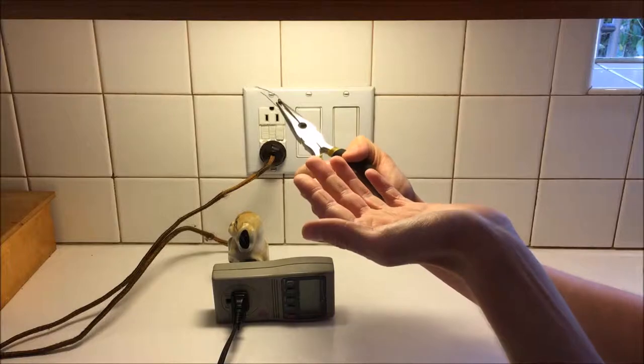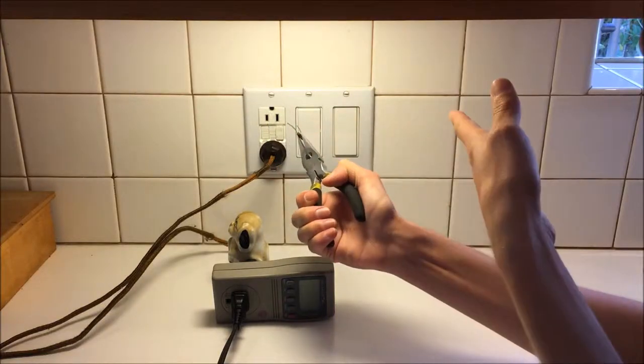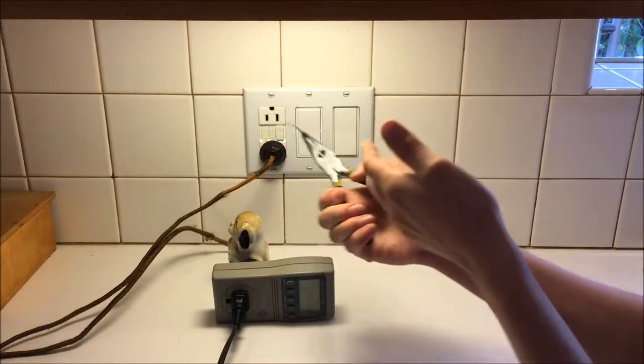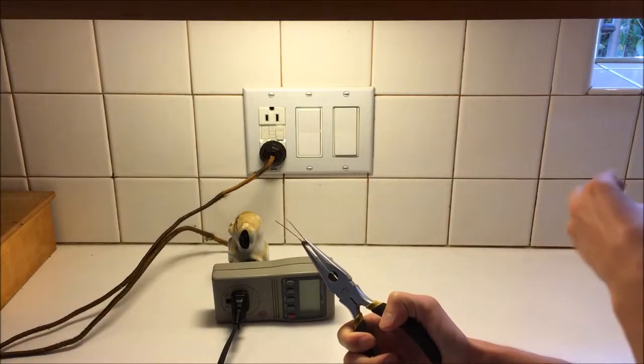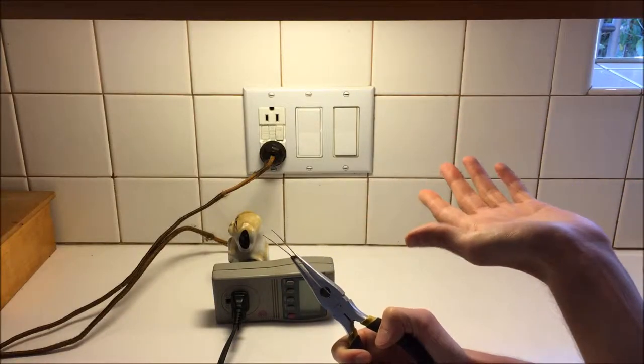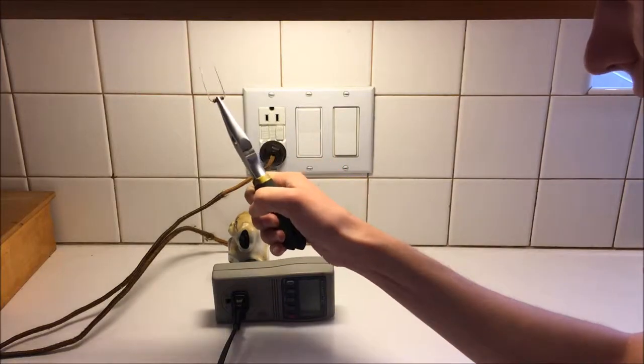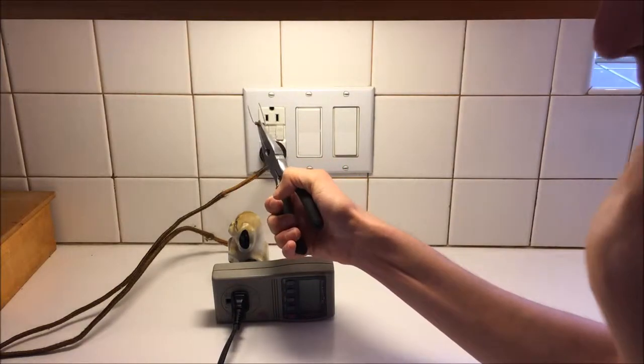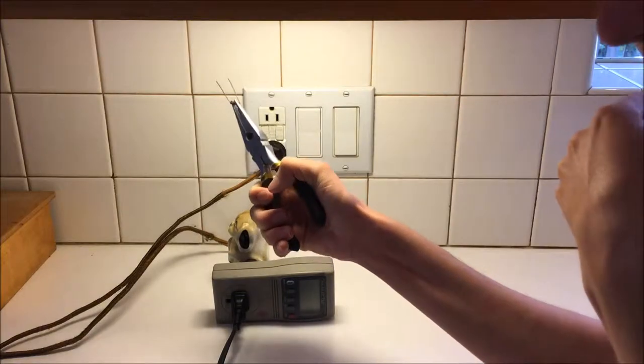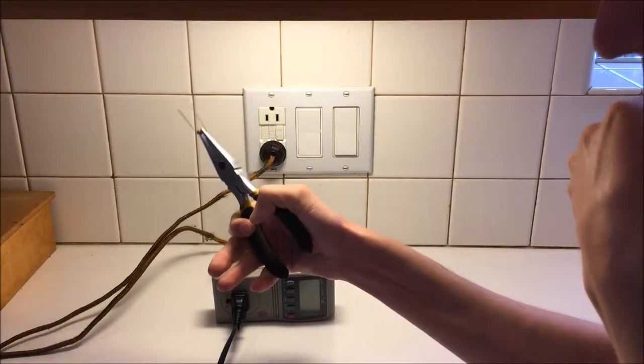Since it was flowing from the hot to the earth instead of the hot to the neutral, the GFCI device was detecting the difference in current and then tripping. Essentially what it thought was that somebody had dropped the toaster into the sink and the current was now flowing through the sink into the pipes. Of course this is just a test, so the GFCI still performed as it would in the actual case of a hazard.